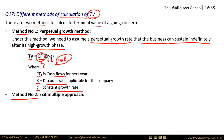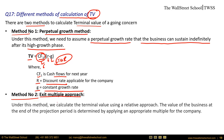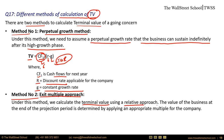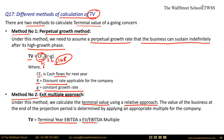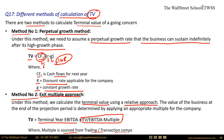Method two: the exit multiple approach, which calculates terminal value using a relative approach. Terminal value = terminal year EBITDA × EV/EBITDA multiple sourced from trading comps or transaction comps. This gives the value of the business at the end of the projection period.